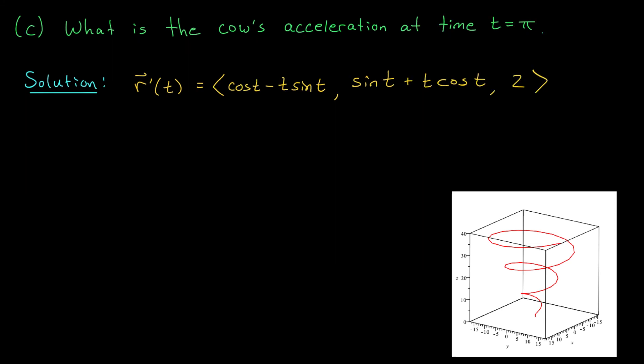Okay, to wrap up this problem, we need to find the cow's acceleration at time t equals pi seconds. Well, in parts A and B, we worked with r prime t, which we interpret as the cow's velocity vector. To find the acceleration, the rate of change of velocity, we need to take the derivative of this vector function one more time. Now, I'm not going to work through all of the details because it's really quite similar to what we did in part A.